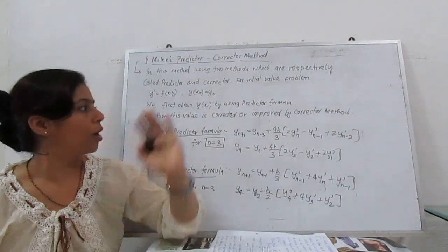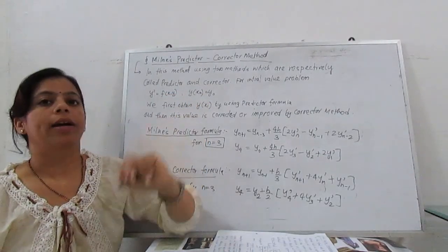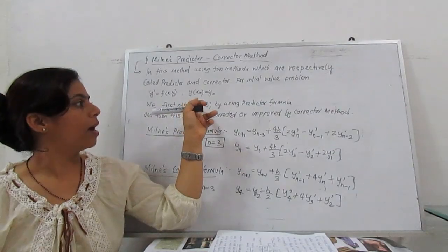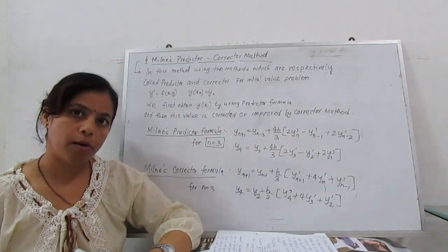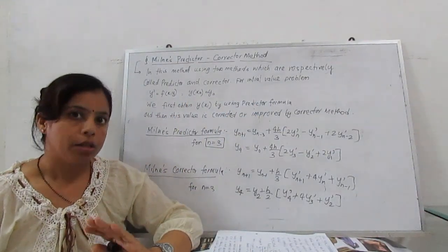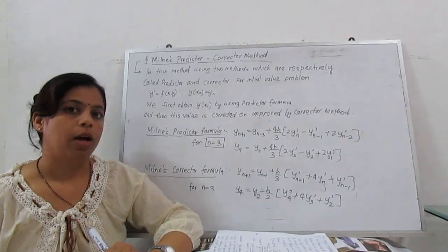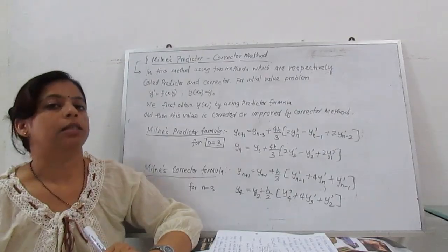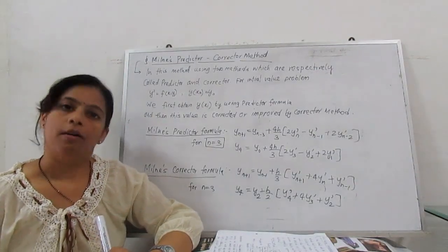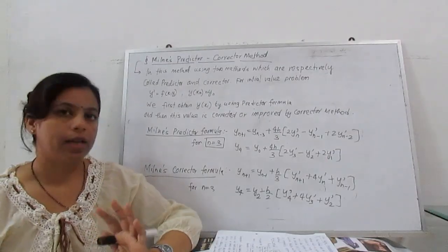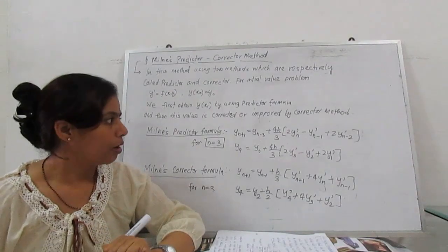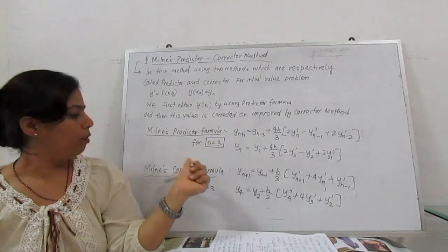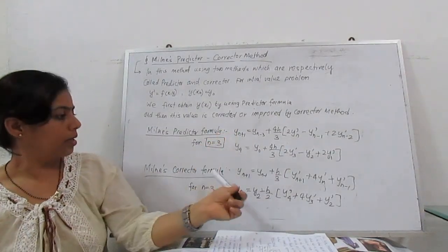For example, if we have to find y₄, first we find y₄ with the predictor formula, and then using corrector formula we have to improve that value. That is the final value for y₄. Let's see what is the predictor formula and what is the corrector formula.